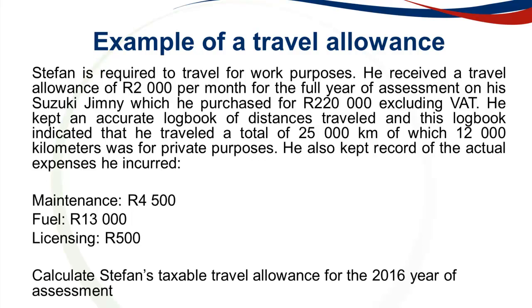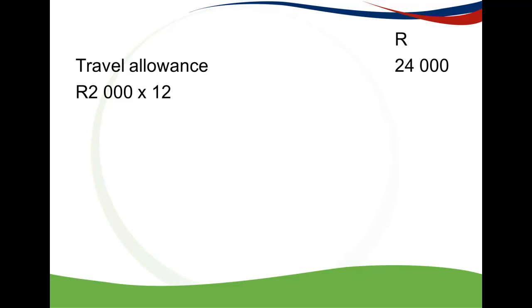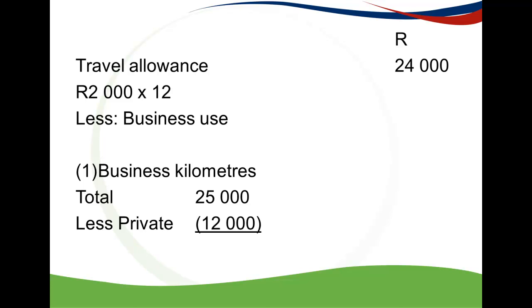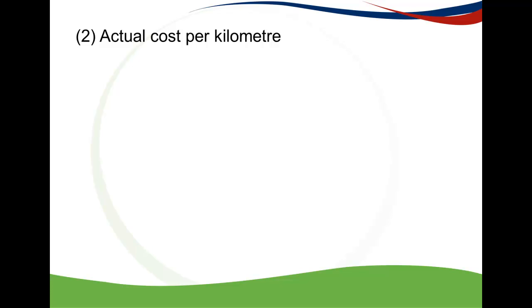We are calculating Stefan's taxable travel allowance for the 2016 year of assessment. First, the travel allowance is 2,000 Rand per month multiplied by 12, giving 24,000 Rand. From that we deduct the business use, which is business kilometres multiplied by the greater of deemed cost or actual cost. For business kilometres: total kilometres of 25,000 less private kilometres of 12,000 equals 13,000 business kilometres. For actual cost per kilometre, if the question doesn't provide actual costs, skip this step.